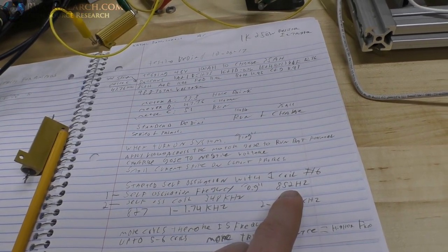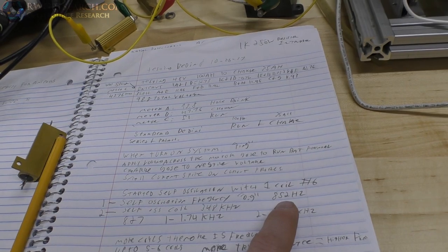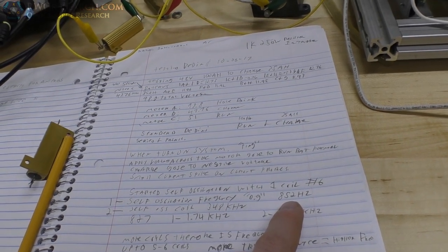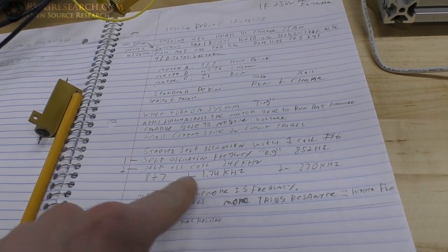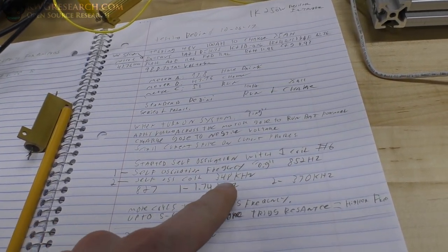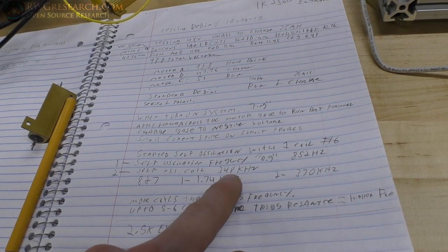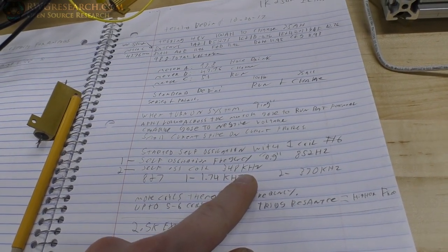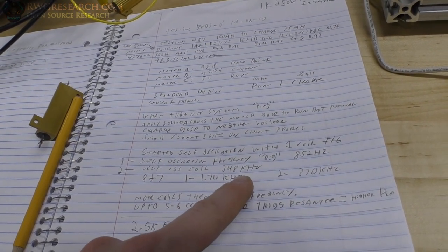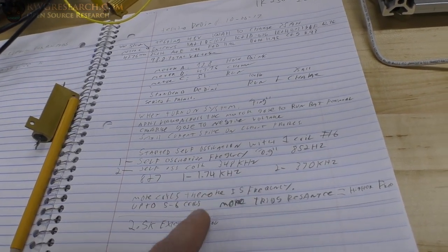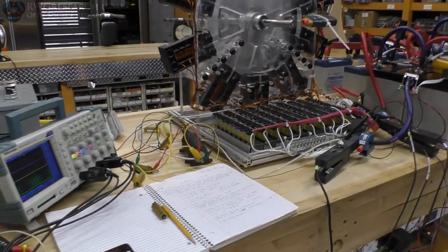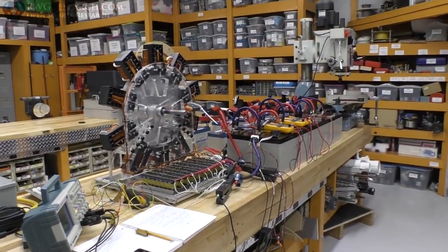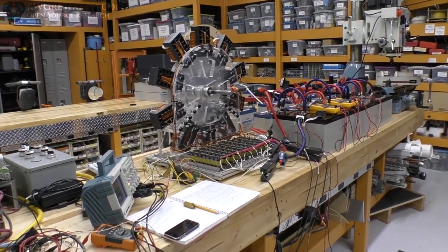So the more coils you connect the higher the frequency, and I think it was the lower the resistance the higher the frequency. And then the self oscillation of the coil was somewhere around 348 kilohertz. So the ring of the coil when there was just a couple connected. But anyway, just logging what I've been doing so that it's all nice and documented for you guys who are following along.